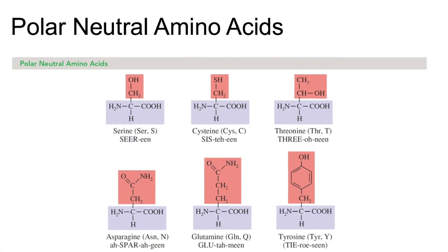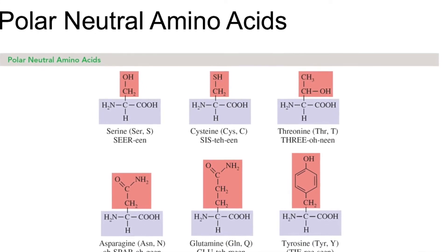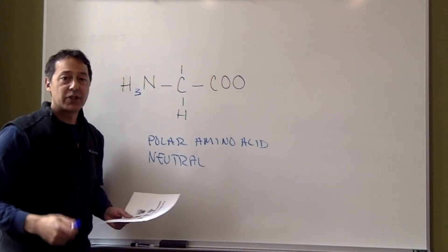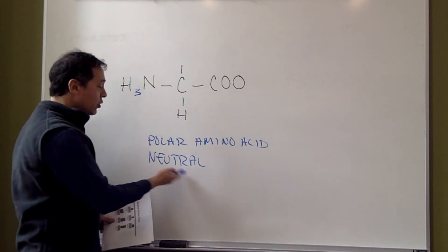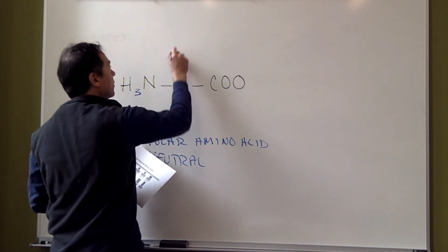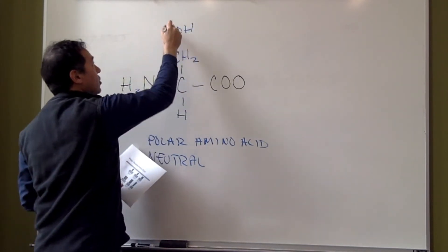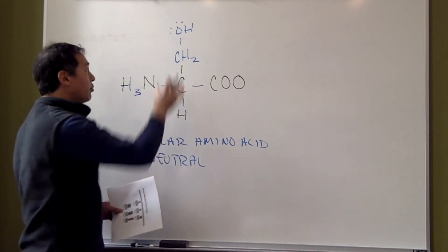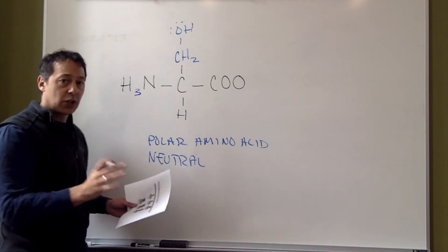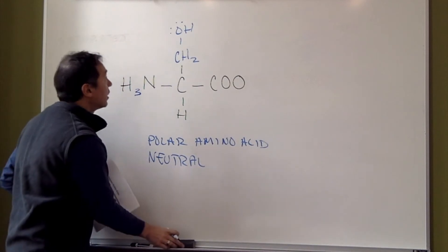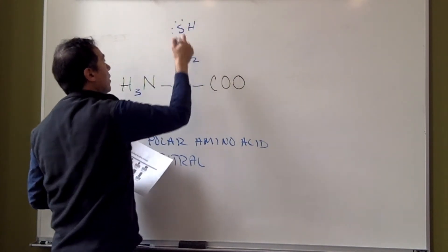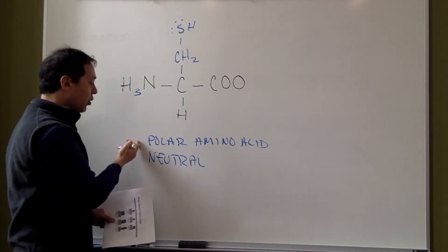The next category is polar neutral amino acids. That means we have a strongly electronegative element attached up here, and neutral means it's not acidic or basic. For these, we're looking for strongly electronegative elements. So something like CH2OH — oxygen has a couple of lone pairs, it's strongly electronegative, so that makes it polar. It's neutral because it's not an acid or a base. Another example is a carbon chain with SH attached — sulfur has a couple of lone pairs, it's fairly electronegative, so it's polar and not an acid or a base.